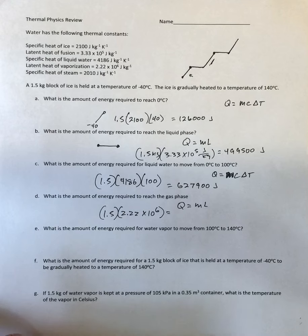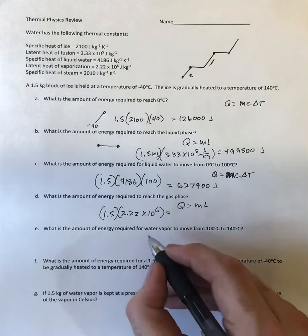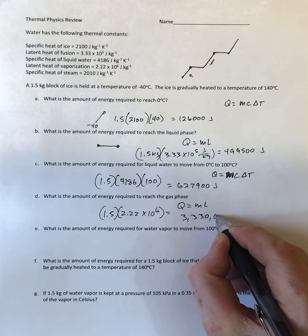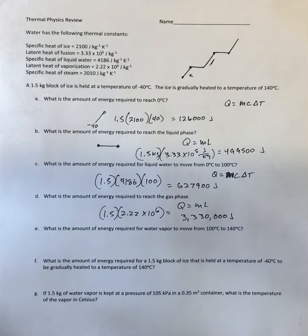Oops, did that wrong. 1.5 times 2.22 gives me 3 million 330 thousand joules.